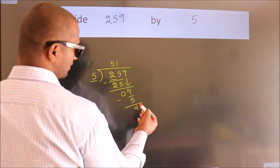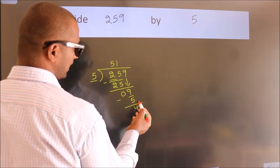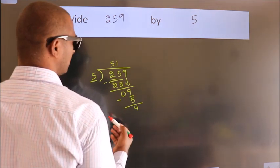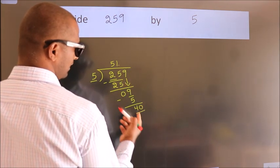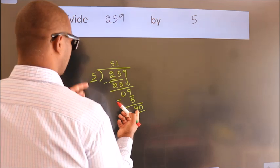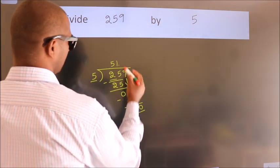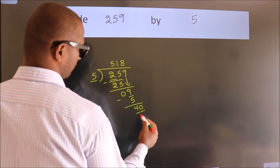After this, there are no more numbers to bring down. So what we do is we put a dot and take 0, making 40. When do we get 40? In the 5 table: 5 times 8 is 40.